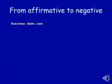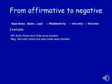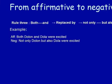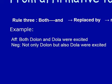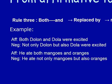Rule number three: 'both...and' is replaced by 'not only...but also.' For example: 'Both Dulal and Dula were excited.' In the place of 'both,' we use 'not only,' and in the place of 'and,' we use 'but also': 'Not only Dulal but also Dula were excited.' Another example: 'He had both mangoes and oranges' becomes 'He had not only mangoes but also oranges.'